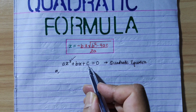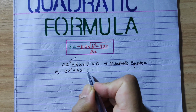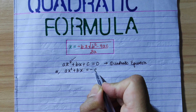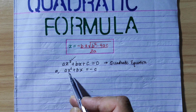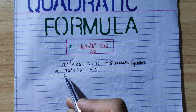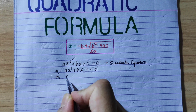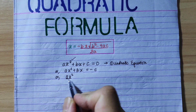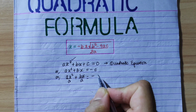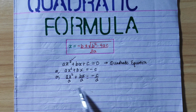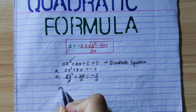We call this the constant term. So, x² plus bx is equal to minus c. This is the highest power term. So x² plus bx is equal to minus c upon a. We have to divide this term, and this will cancel.